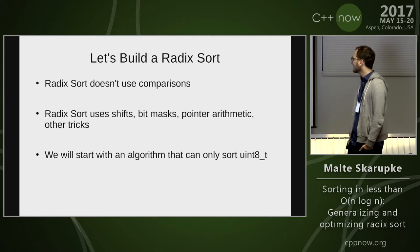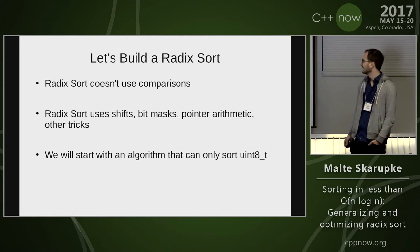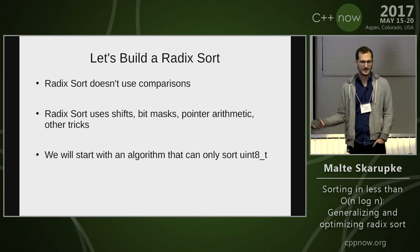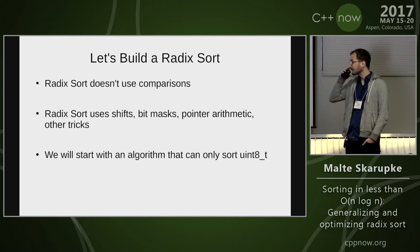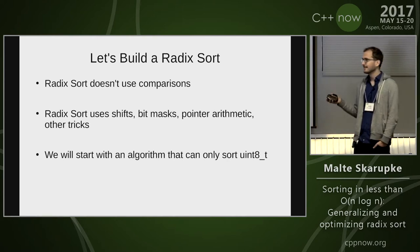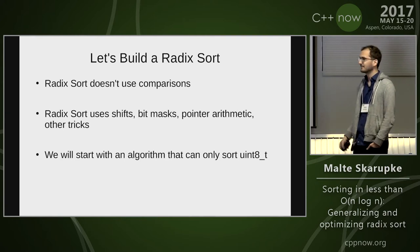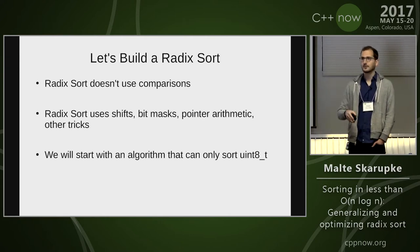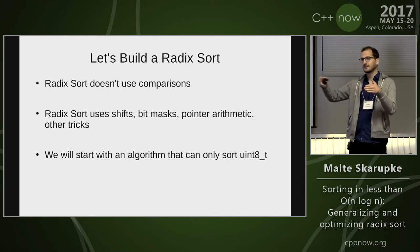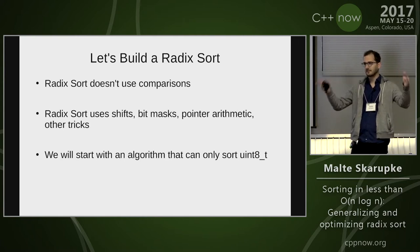Let's build a radix sort. Radix sort is interesting because it doesn't use comparisons—instead it uses bit shifts, bit masks, pointer arithmetic. You can be quite creative. Staying in the spirit of the book, we start with a simple algorithm and generalize step by step. We start with something that can only sort single bytes: say I want to sort a thousand bytes—all the zero bytes in front, all the one bytes, all the two bytes, etc.